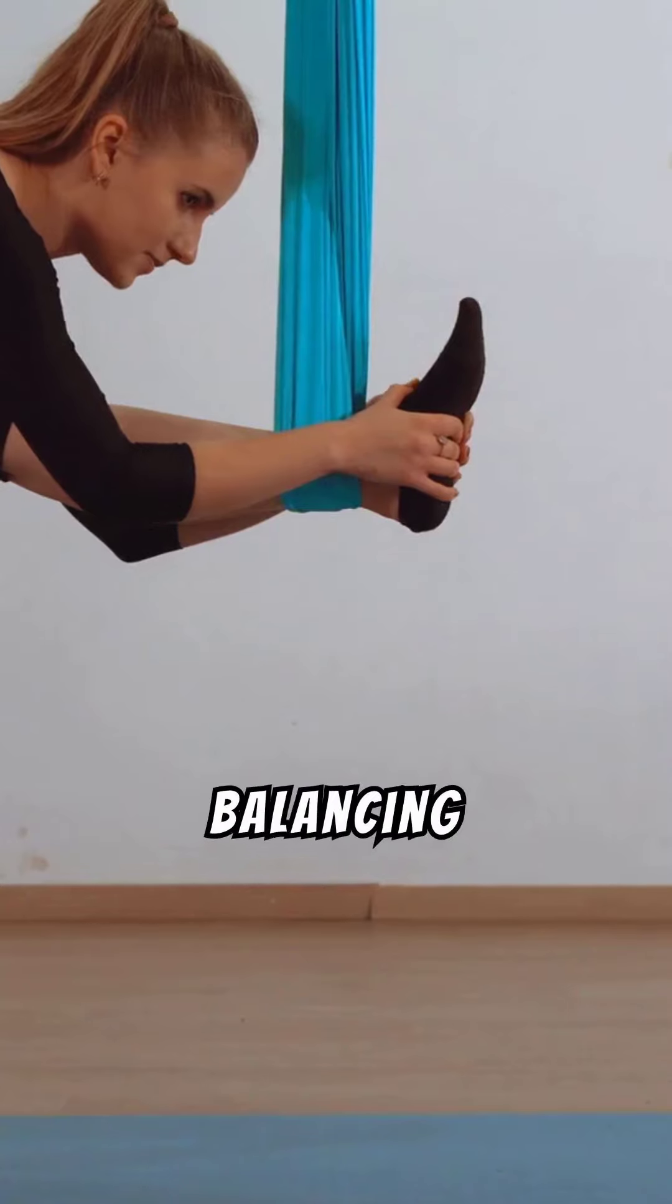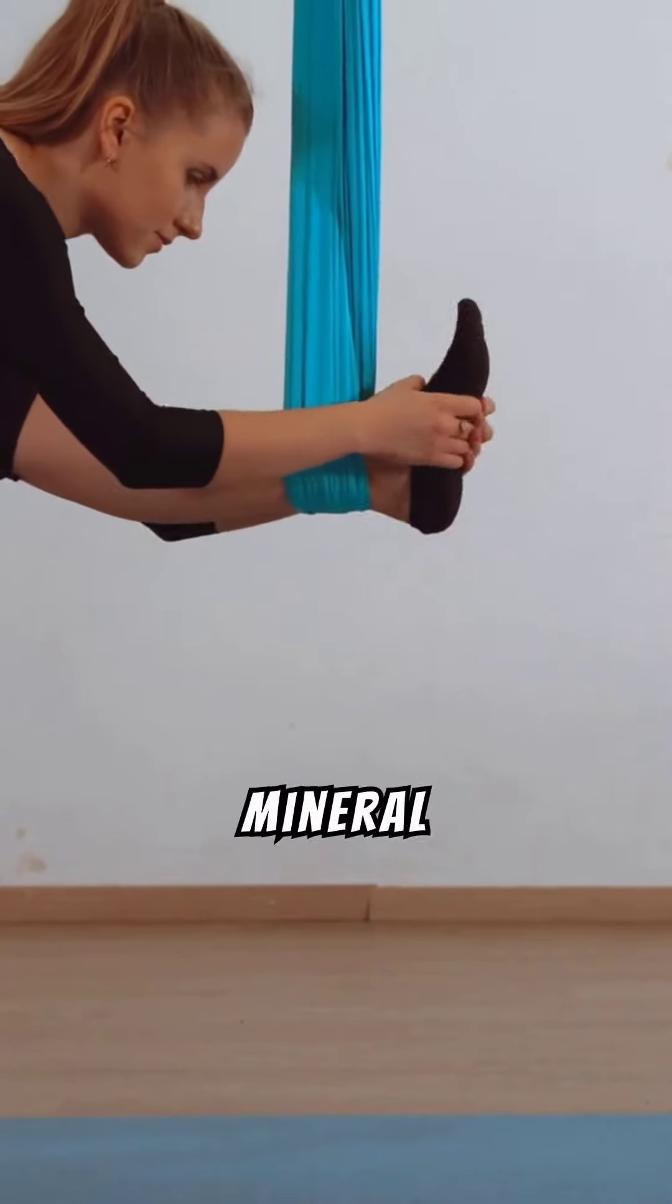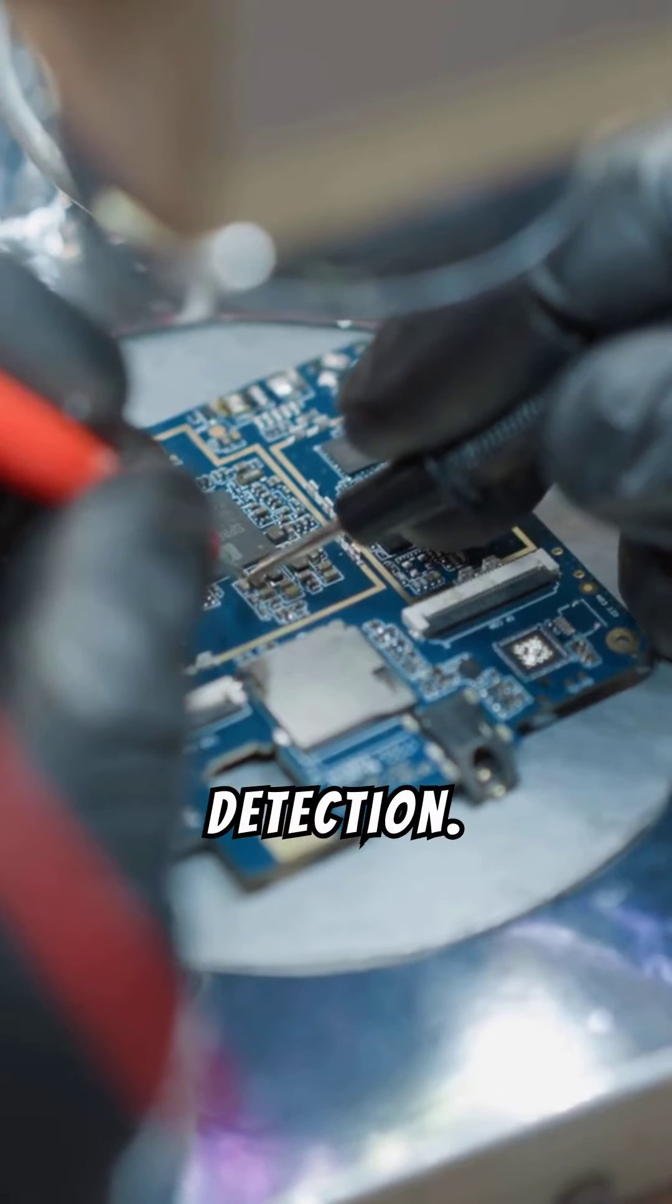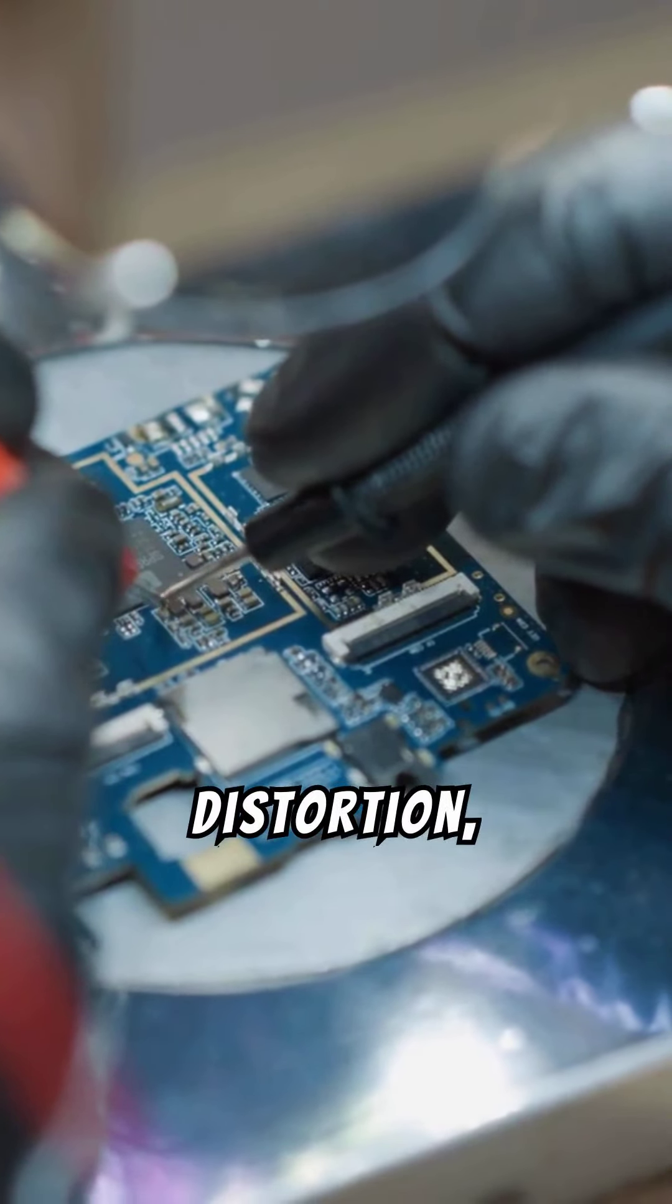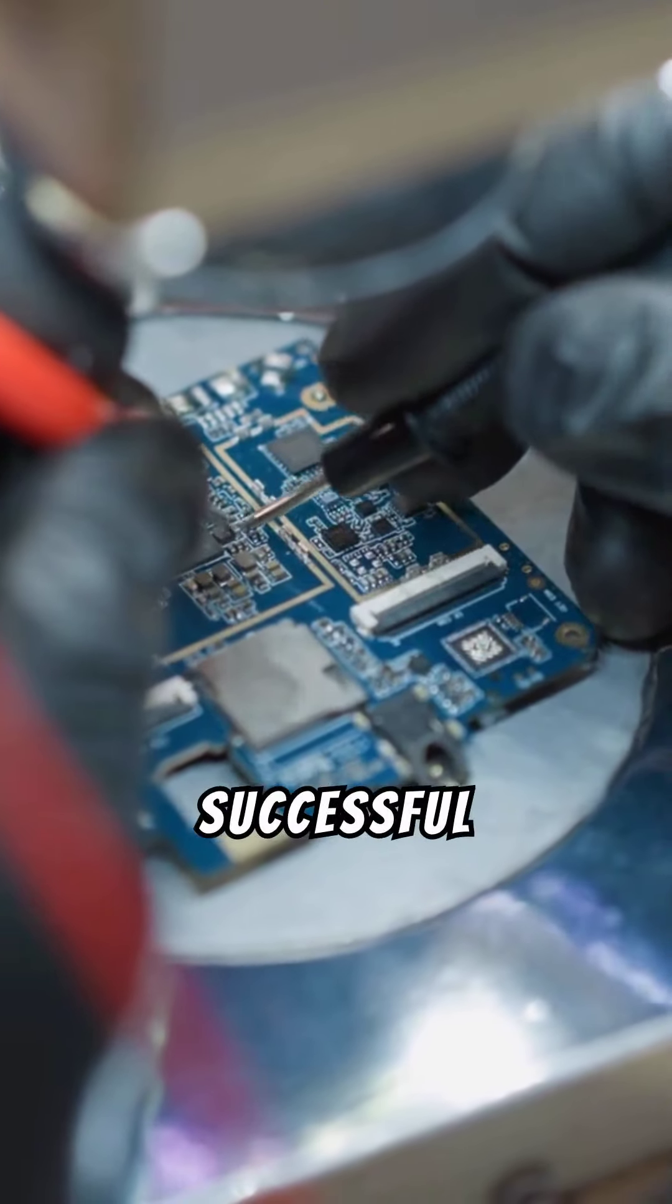Ground balancing is vital in canceling out mineral signals, focusing on gold detection. Regular equipment calibration prevents signal distortion, enhancing the likelihood of successful gold discovery.